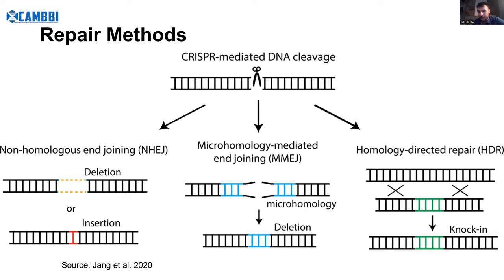Non-homologous end joining is quite problematic for the cell, but it can be used with a CRISPR cut to delete or destroy a gene. In two of three cases everything behind the cut position becomes nonsense. This is quite practical if you just want to destroy something — for example, knocking out a mutated gene that produces a toxic product can already help if you have such a problem.